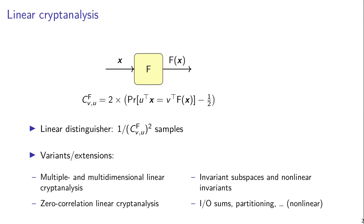A well-known fact is that if we have about 1 over the squared correlation samples, then we are able to set up a linear distinguisher. Given the importance of linear cryptanalysis, there have been a large number of variants and extensions that were proposed. I list some of those on the slide, but it's not so important if you don't recognize all of them.